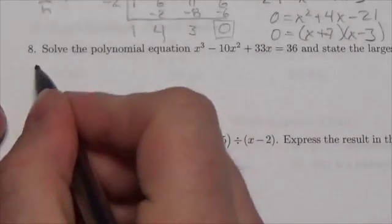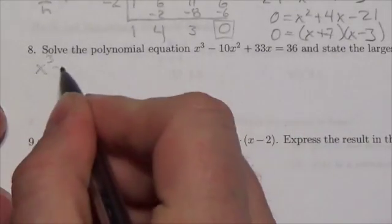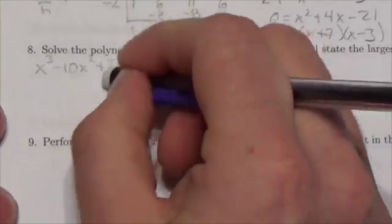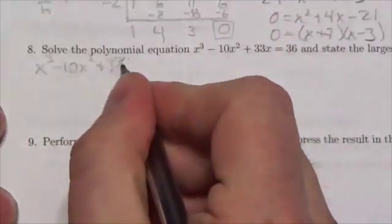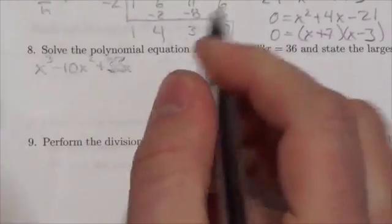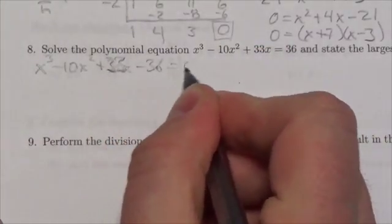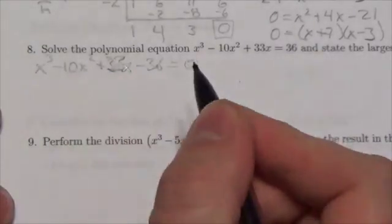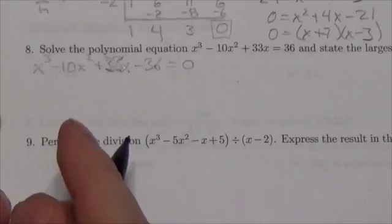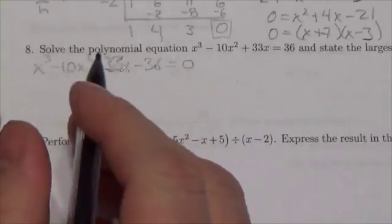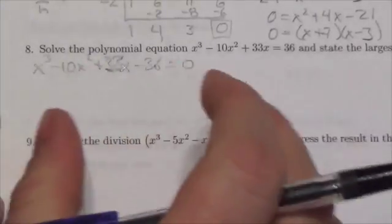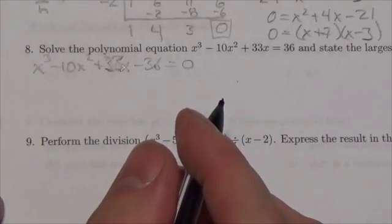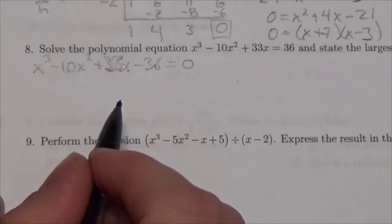Well the first thing we're going to do, when we've got a polynomial like that, is we're going to make sure it's set equal to 0. So we're going to bring that, whoops, sorry, that should be 33x, minus 36 is equal to 0. Now we want it equal to 0, because our method of solving here is going to be to factor this expression, and then because it's equal to 0, then the factors themselves individually would go to 0 to make that work there.